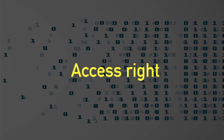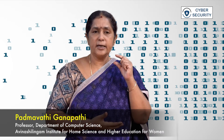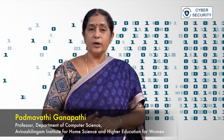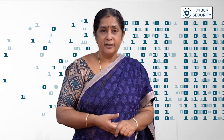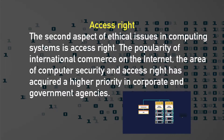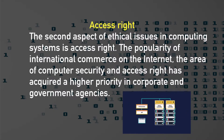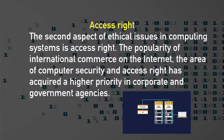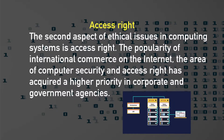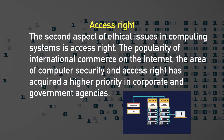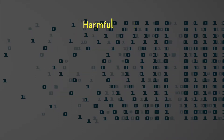Next comes the access right. The second aspect of ethical issue in computing systems is access right. The popularity of international commerce — in short, e-commerce or electronic commerce through the internet — has made the area of computer security and access right a higher priority in corporate and government agencies.